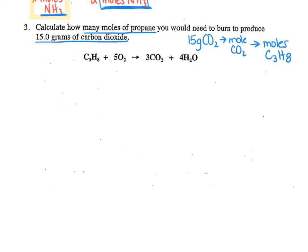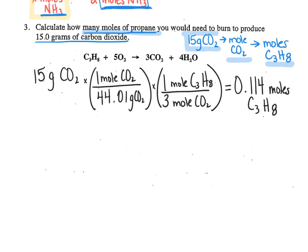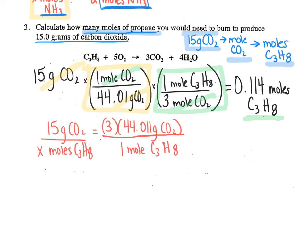Here's the next problem: I am given grams of CO₂ and it wants me to find moles of propane. The only way to get to moles of a different material is to first calculate my moles of CO₂, so this is a two-step problem. My first step converts from grams to moles of CO₂, and my second step uses the coefficients to convert from moles of CO₂ over to C₃H₈. For the alternative method, I take the molar mass of CO₂ multiplied by 3 (the coefficient), set it equal to 1 mole of C₃H₈, and cross-multiply to solve.